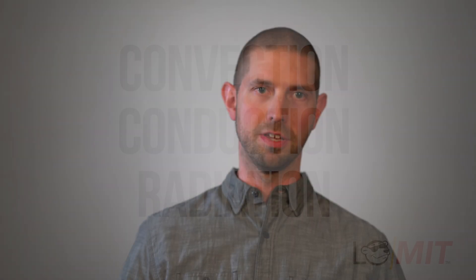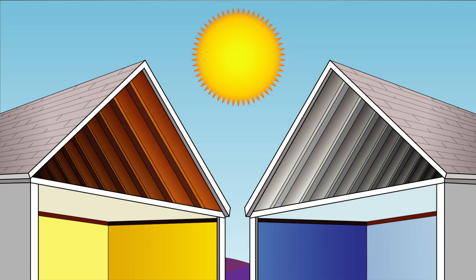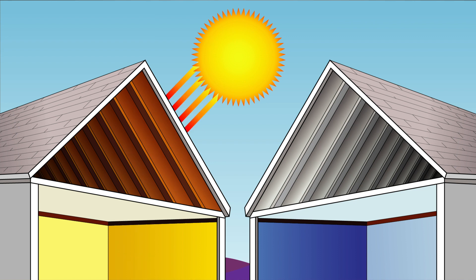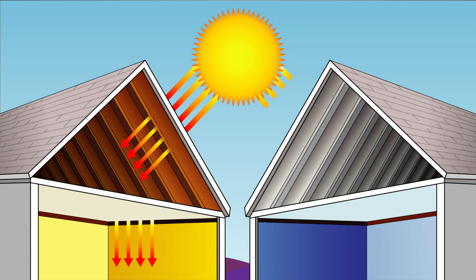Homes keep convective and conductive heat in check with insulation and ventilation. However, typical home construction doesn't address radiative heat transfer, which accounts for 90% of an attic's heat gain. When the sun warms your roof, heat radiates into the space beneath it, warming your entire home. Exactly how much heat comes in is determined by emissivity. The lower a roof's emissivity, the less heat that enters the attic, and the cooler houses stay.